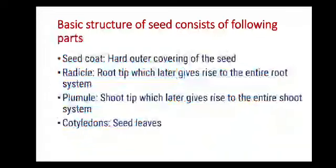The basic structure of seed consists of the following parts: seed coat, radicle, plumule, and cotyledons. These are the main parts of a seed.